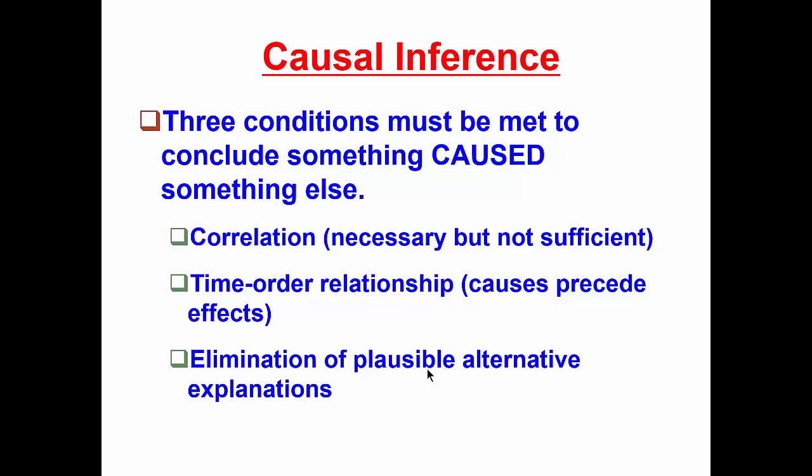But nevertheless, it is the case that experimenters should engage in trying to anticipate alternative explanations for their findings. And one of the benefits of the peer review process is that a peer reviewer might be able to generate a plausible alternative that an experimenter didn't originally conceive. And because of that, the peer review process is very important to science.